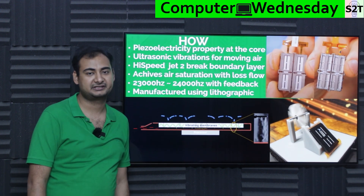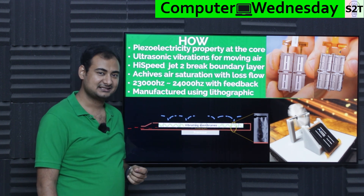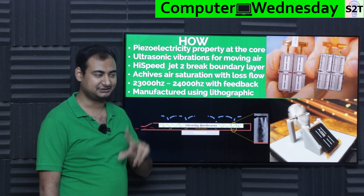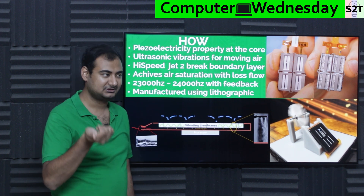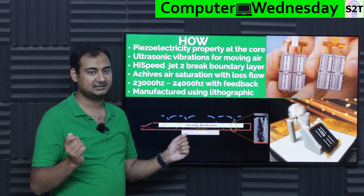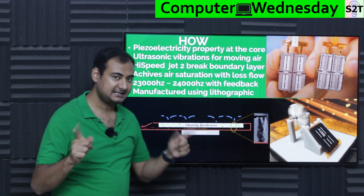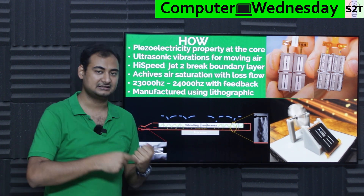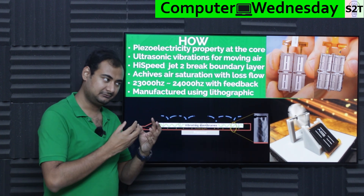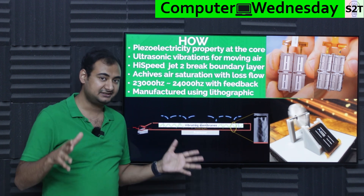How does something only three millimeters thick achieve this? It uses piezoelectricity. You may know gas lighters or propane lighters that use a piezoelectric igniter — that can be done in reverse: you put electricity in and it vibrates. Exactly like your watch clock, which has a piezoelectric oscillator. They took that property of certain materials and engineered things around it to make it work.